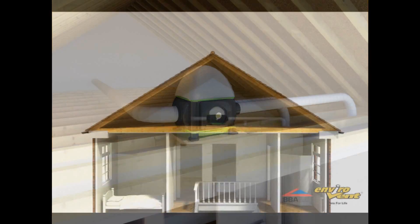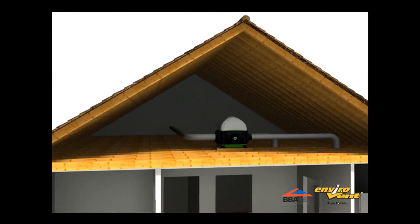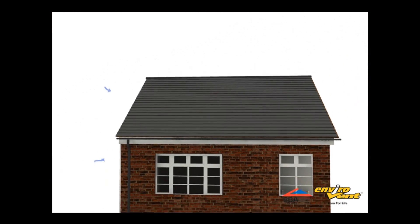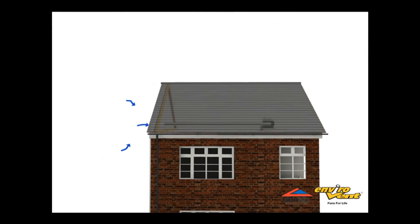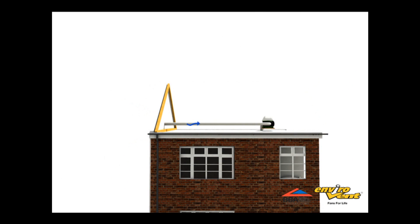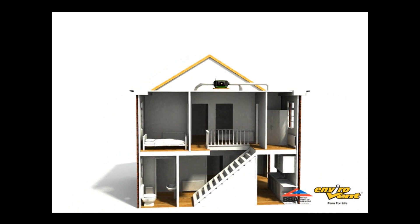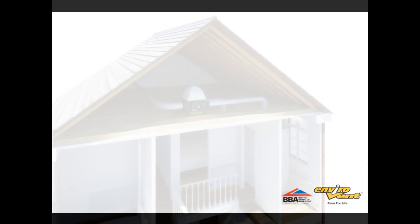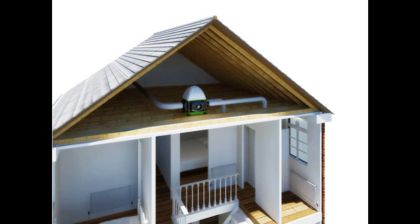When the loft temperature exceeds 25 degrees, the unit automatically detects this and activates a damper that switches the air supply from inside the loft space to the cooler air from outside the property. The result is all year round whole house ventilation — fresh filtered air being introduced into the property in the most energy efficient way possible.